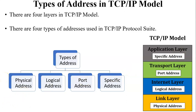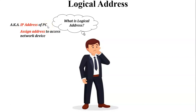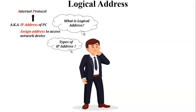In this video I am going to discuss about logical address. So what is logical address? Logical address is one kind of address assigned to a network device to access that device from the same network or from a different network. Logical address is also known as the IP address of a PC, router, or switch. The full form of IP is Internet Protocol, and as the name suggests, it is used at the internet layer.